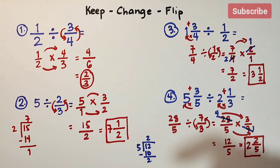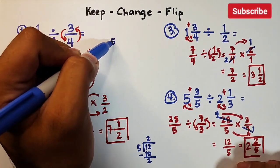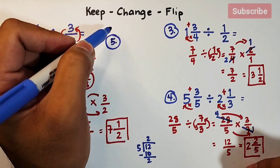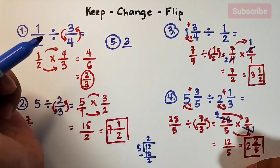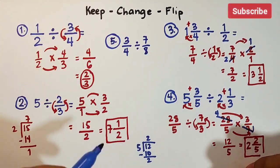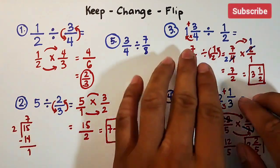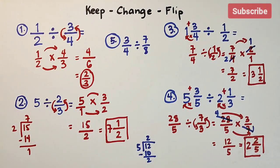For your assignment, try number 5: 3 over 4 divided by 7 over 8. I hope you learned something from this video on how to divide a fraction by a fraction, a whole number by a fraction, a mixed number by a fraction, and a mixed number by another mixed number. If you're new to my channel, don't forget to like and subscribe and hit the bell button for updates on our latest uploads. Again, it's me Teacher Gorn — thank you very much, bye!